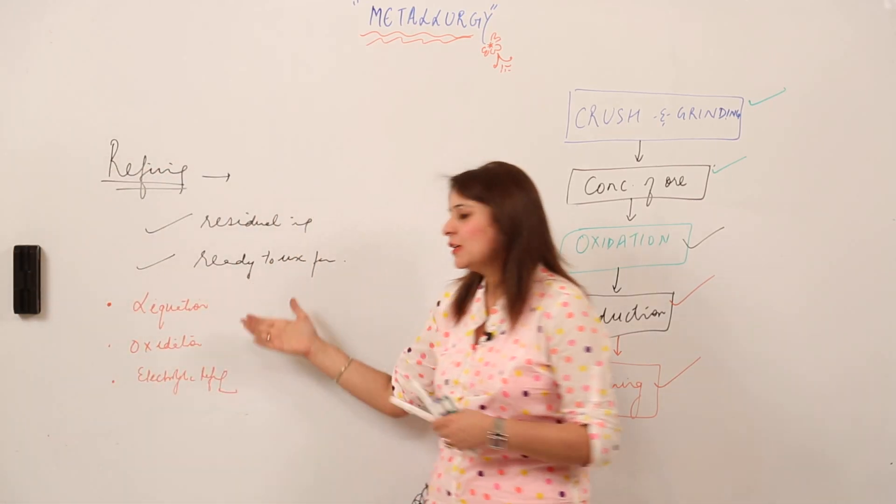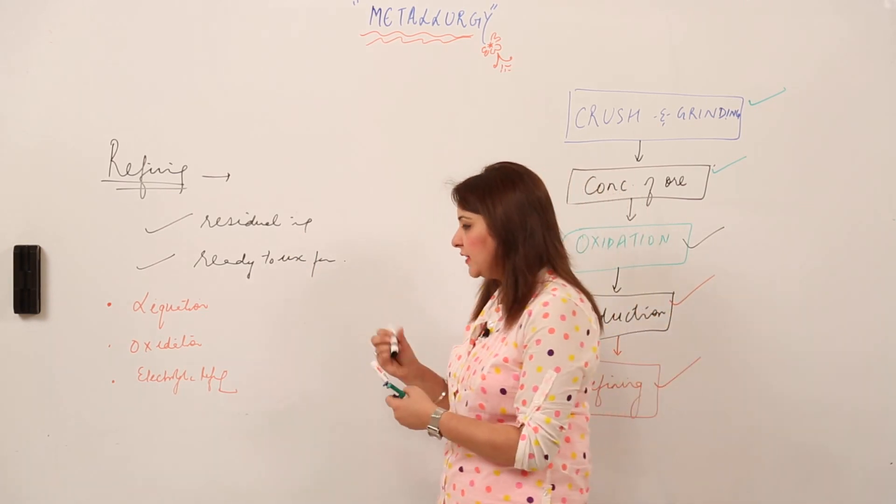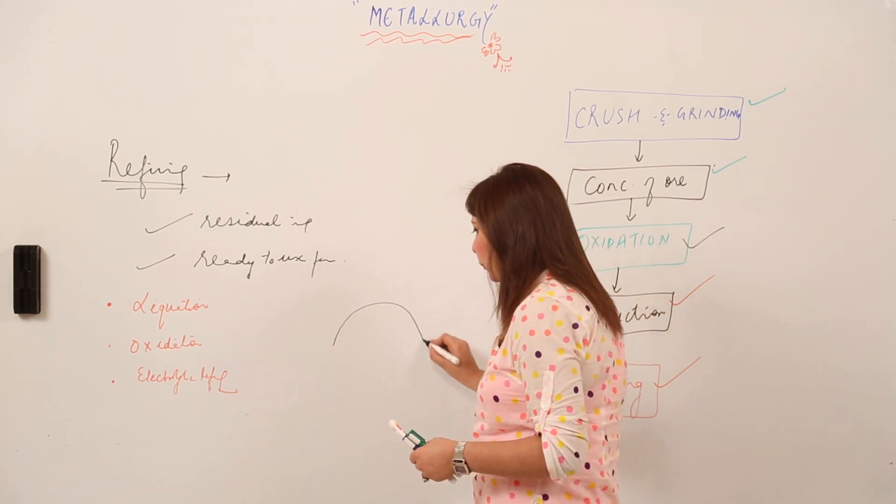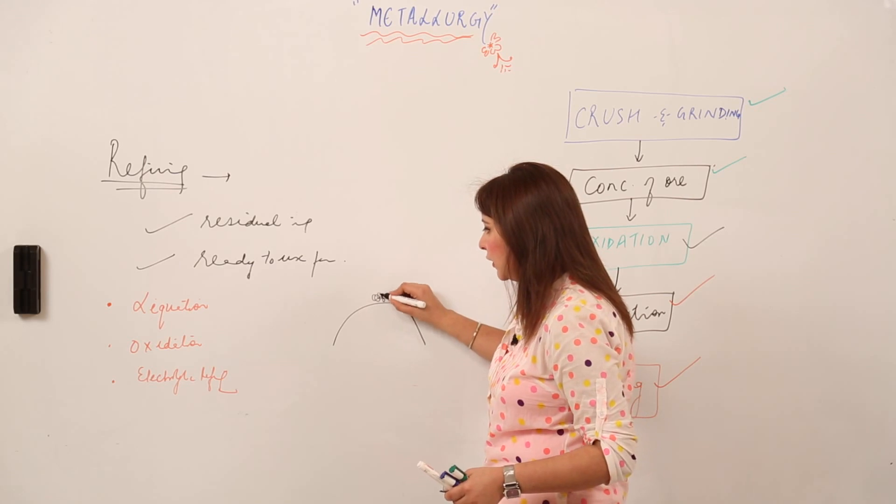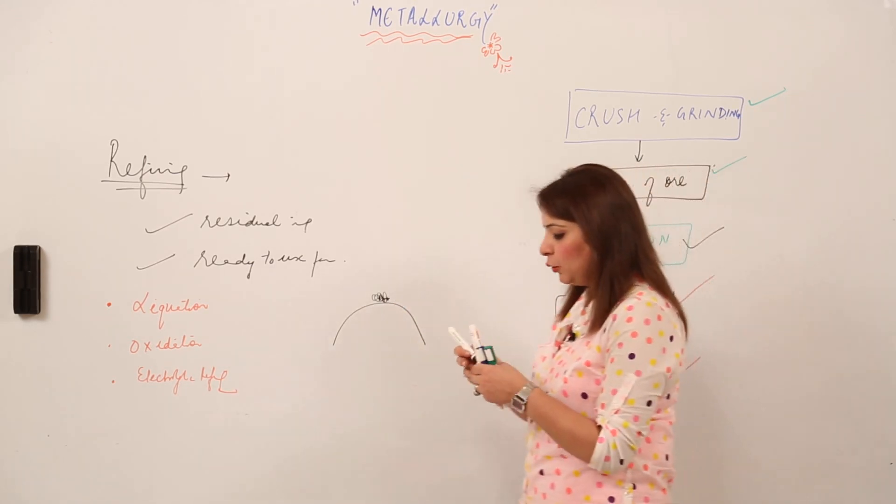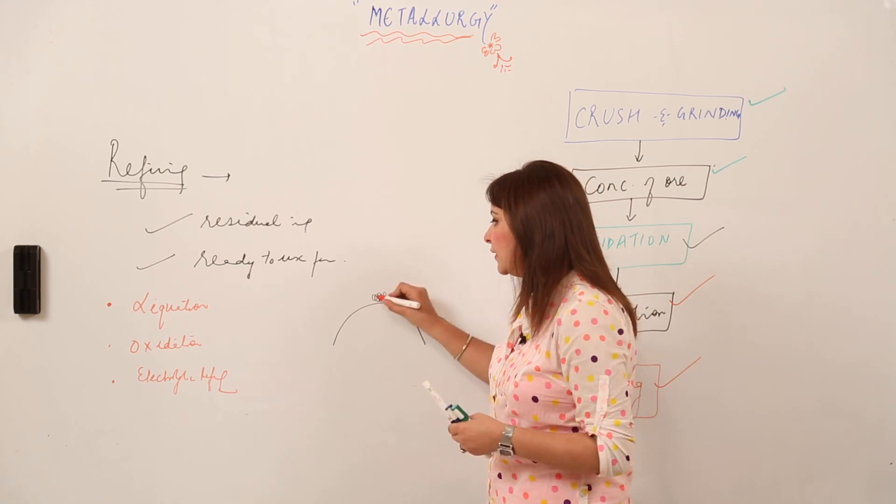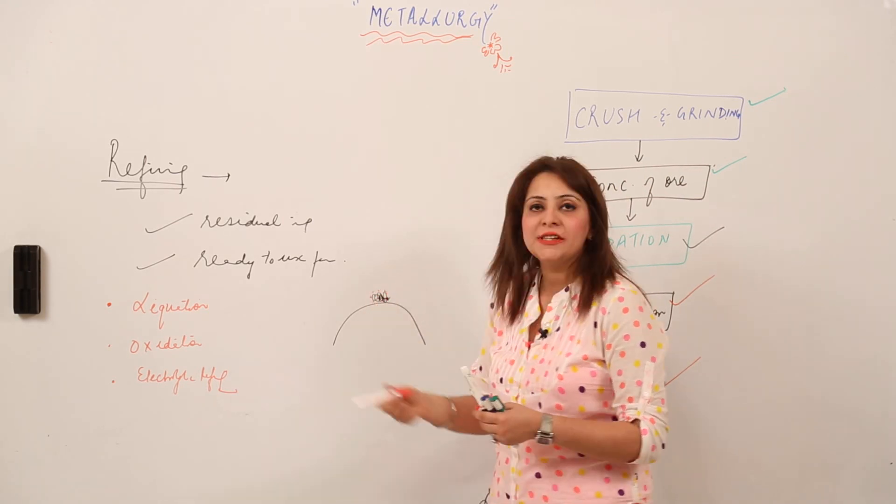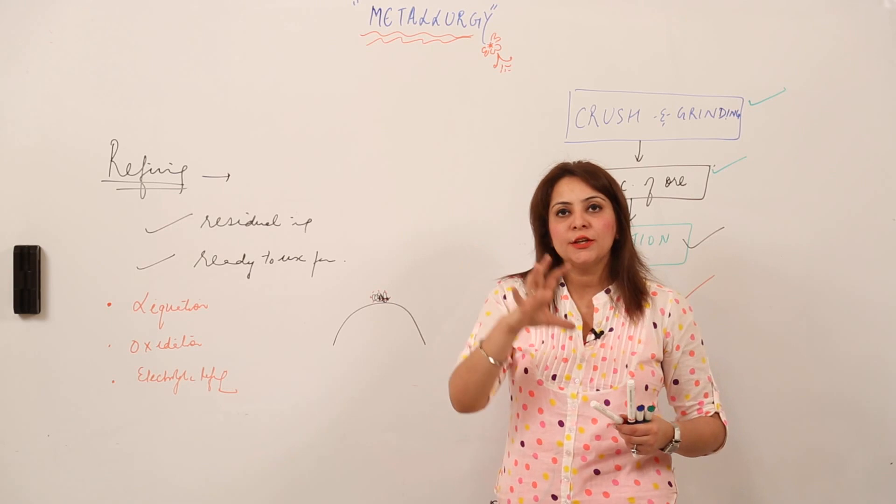In liquation method, it's very simple. We take a hearth with a slope like this. We keep the metal obtained from reduction, which contains residual impurities sticking to its surface.